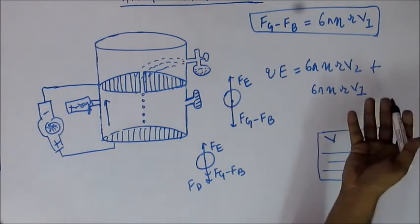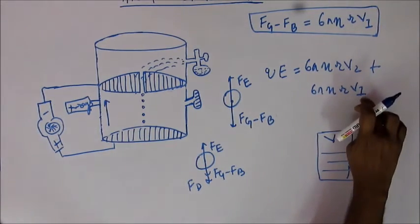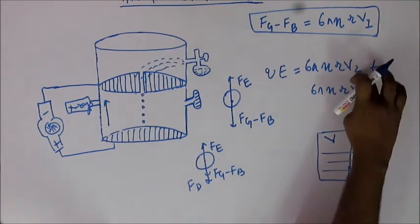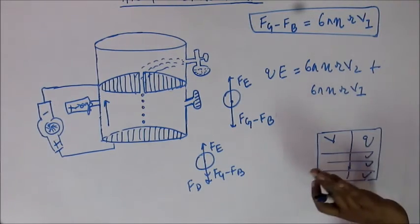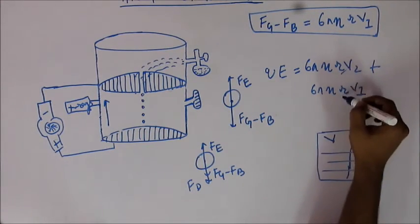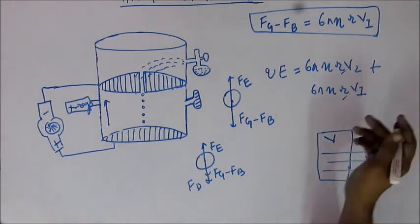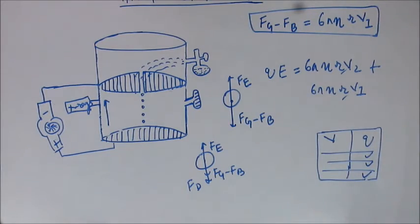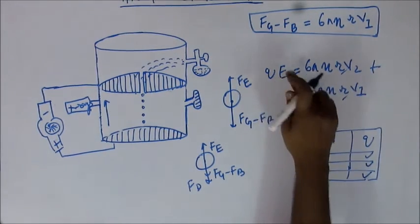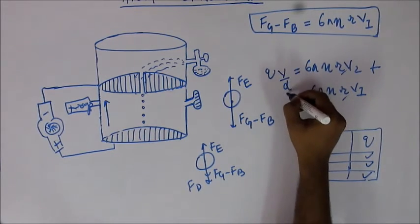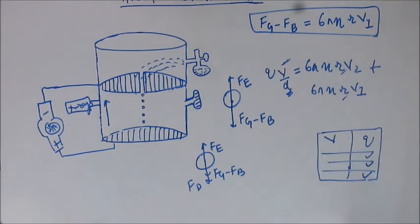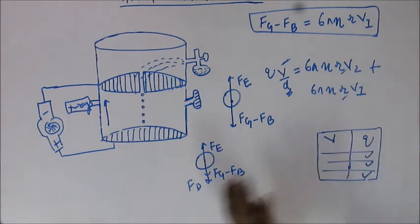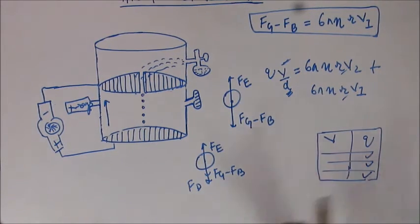So again, the right-hand side is known. Just as you found V₁ from physical measurement, you will similarly find V₂ from physical measurement. The right-hand side will be known, and R will be the same as before, because the atomizer creates droplets with the same radius. E can again be written as V divided by D, where D is known and V is known, so Q can be found from this equation. You do the same thing — repeat the experiment multiple times and find all possible values of charges.